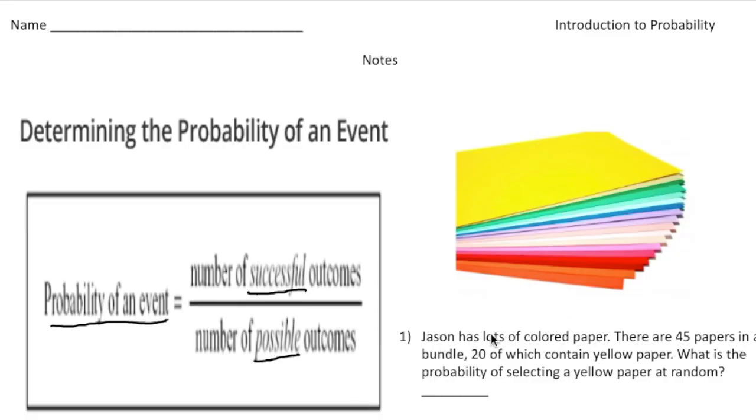So take a look at this problem over here. It says, Jason has lots of colored paper. There are 45 papers in a bundle, 20 of which contain yellow paper. What is the probability of selecting a yellow paper at random? So again, imagine that all these pieces of paper are mixed up, right? And you randomly select one piece.